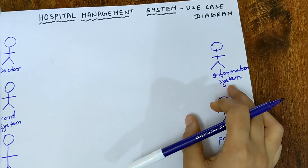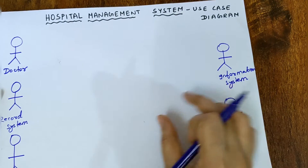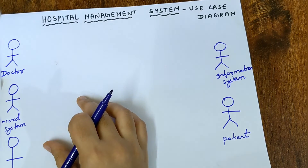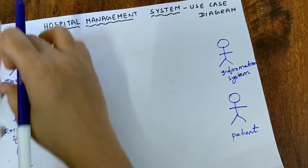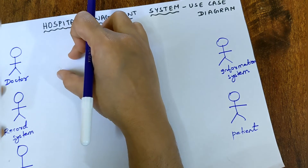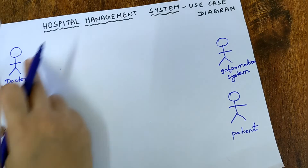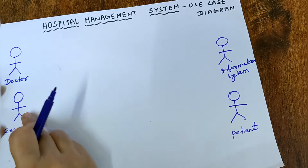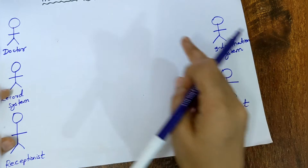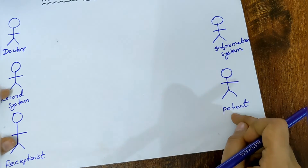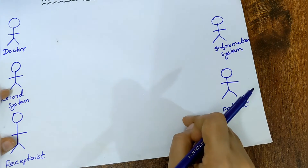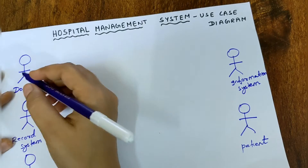The second step is we have to draw the use case for every single actor. Use cases will be written inside an ellipse. For each actor, you have to draw the corresponding use cases — for doctor, record system, receptionist, information system, and patient.